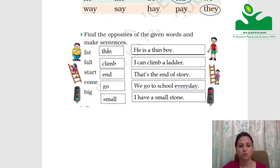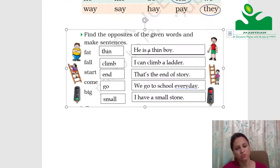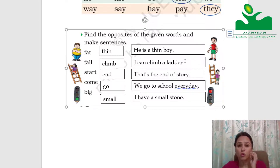Find the opposites: the first word is fat, and its opposite is thin. Sentence: He is a thin boy. You can see a fat boy on the left and a thin boy on the right in the picture. Fall — the opposite is climb. Sentence: I can climb a ladder. Note that the opposite of fall can also be rise — rise means uthna, fall means girna — so you can make a sentence with rise too.